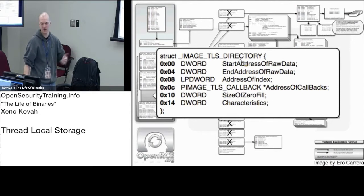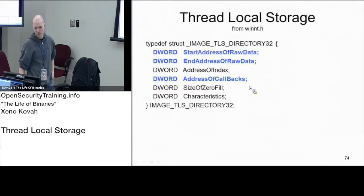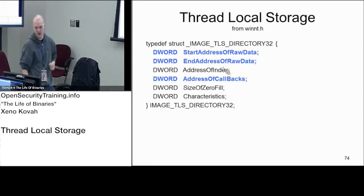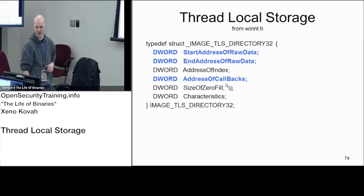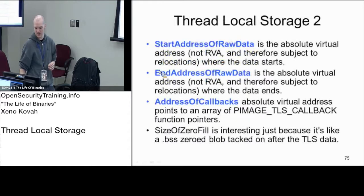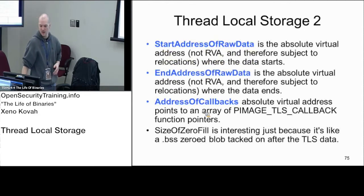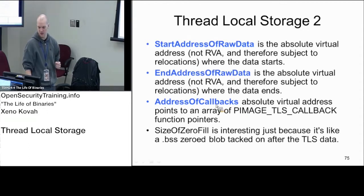From the data directory we go to the relevant index and find a pointer to the TLS directory. Within this TLS directory, there's a start and end address of raw data — that's where the thread local storage data lives. What we really care about is the 'address of callbacks,' which is an array of absolute virtual addresses pointing to functions that get called when a new thread starts, used to initialize data.